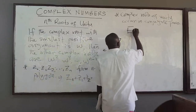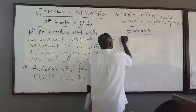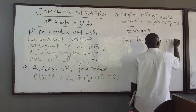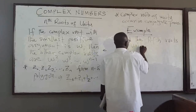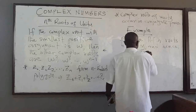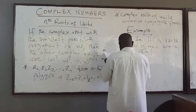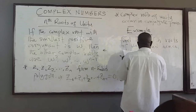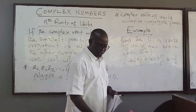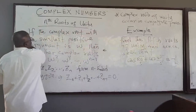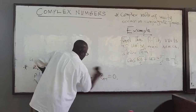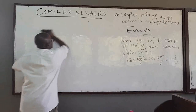So let's do an example. Find the fifth roots of unity, and hence show that cos(2π/5) + cos(4π/5) = −1/2. This is similar to what we proved before for the cube roots. Once we finish this, we'll be done with finding the roots of complex numbers.